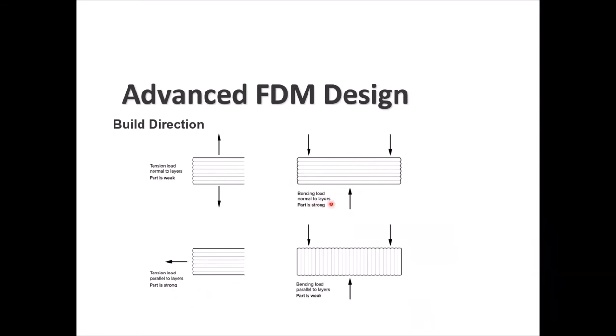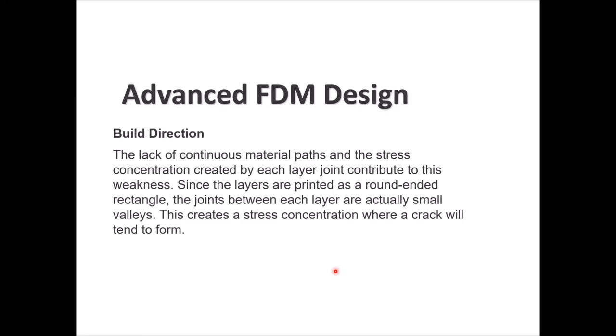If you have a bending load normal to the layers, the part is strong. But if the bending load is parallel to the layers, you can peel the layers apart, making the part weak. So it depends on the application — keep in mind the build direction and what forces the part will encounter. Also, missing continuous material paths and stress concentration at each layer joint contribute to part weakness. FDM layers are rounded rectangles, creating small valleys that act as stress concentration points.